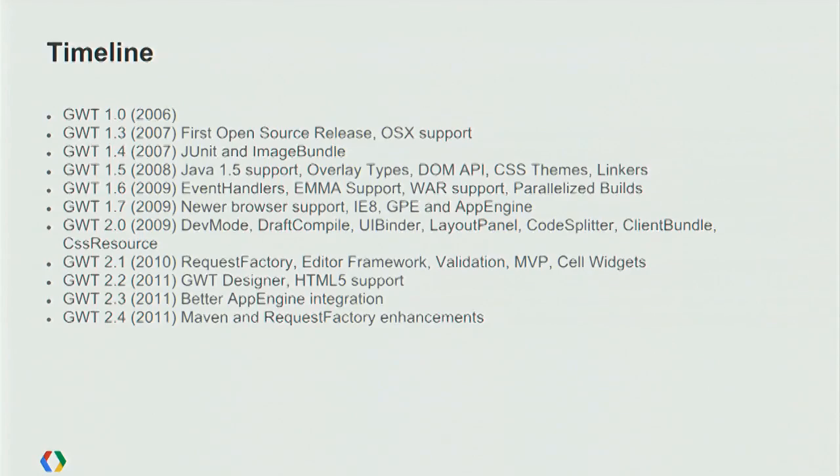GWT 2.0 was the biggest release ever. We added a totally new dev mode so you could develop with any browser — Chrome, IE, Safari, Firefox. Previously, we were bundling a really old version of Firefox or IE directly into the toolkit and you couldn't upgrade. We added draft compilation to speed up compiles, a new templating system called UI Binder, layout panels for efficient CSS layout, the code splitter allowing deferred loading of parts of your app, and Client Bundle for bundling resources including a CSS compiler that optimizes and shrinks CSS.